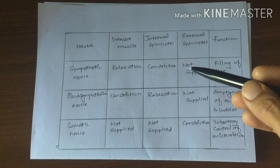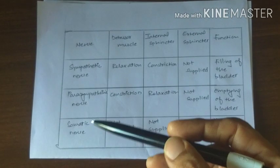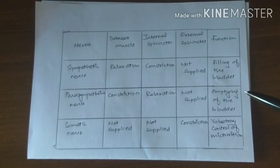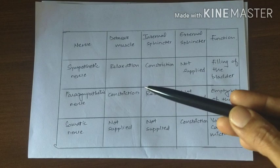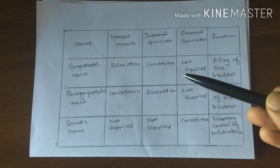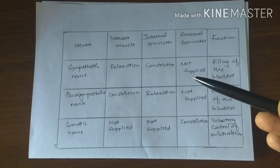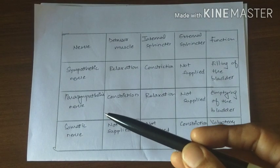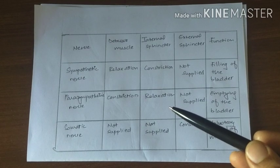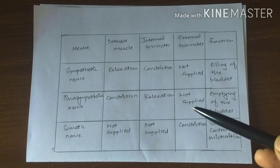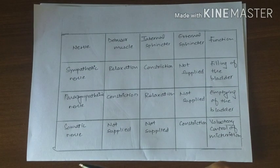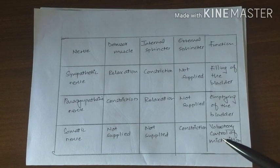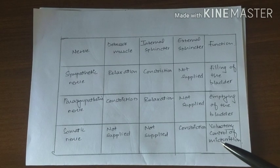In summary, sympathetic, parasympathetic, and somatic nerves supply the detrusor muscle and sphincters. Sympathetic nerves, the nerve of filling, cause relaxation of the detrusor muscle and constriction of the internal sphincter; they do not supply the external sphincter. Parasympathetic nerves, the nerve of emptying, contract the detrusor and relax the internal sphincter; the external sphincter has no parasympathetic supply. The somatic pudendal nerve supplies only the external sphincter and is responsible for voluntary control of micturition.